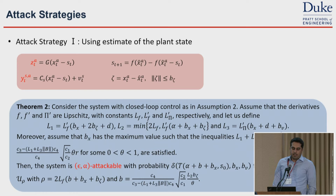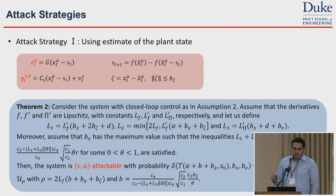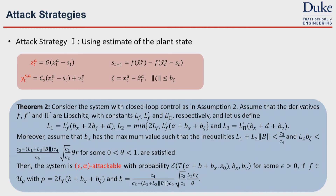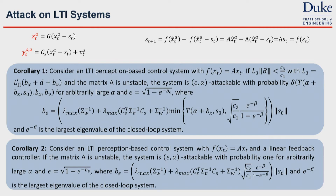In Theorem 2, we found the condition under which, for attack strategy 1, there exists a sequence of epsilon-alpha attacks. We showed that if the closed-loop system is exponentially stable and the open-loop system is unstable, then under some condition over the Lipschitz constants and exponentially stable constants, there exists such a sequence for the considered system. We also found the condition for attack strategy 2, but due to the time limit I cannot go into that. For LTI systems, both attack strategies fall into the same category, meaning the attacker doesn't need access to the state estimate.